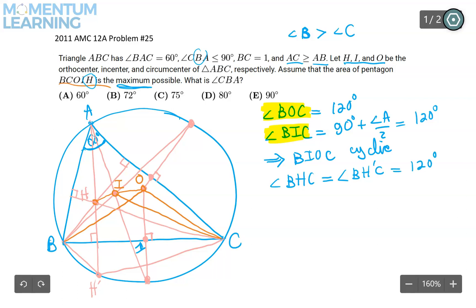And as a result, angle BHC would be the same as angle BH prime C. But BH prime C, when you think about it, it's part of the quadrilateral, the cyclic quadrilateral A, B, H prime C. That's a cyclic quadrilateral. Because angle A is 60 degrees, BH prime C must be 120 degrees. Holy. So not only we have BIOC, which is a cyclic quad, but the point H is also on that circle. Does that make sense? So now what we have is we have this large circle, which goes through those five points.